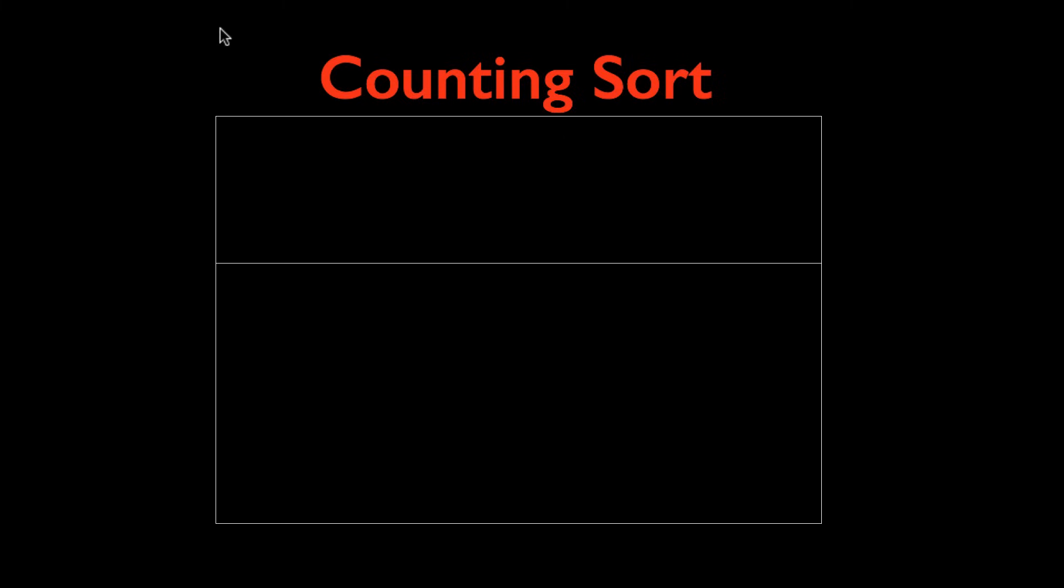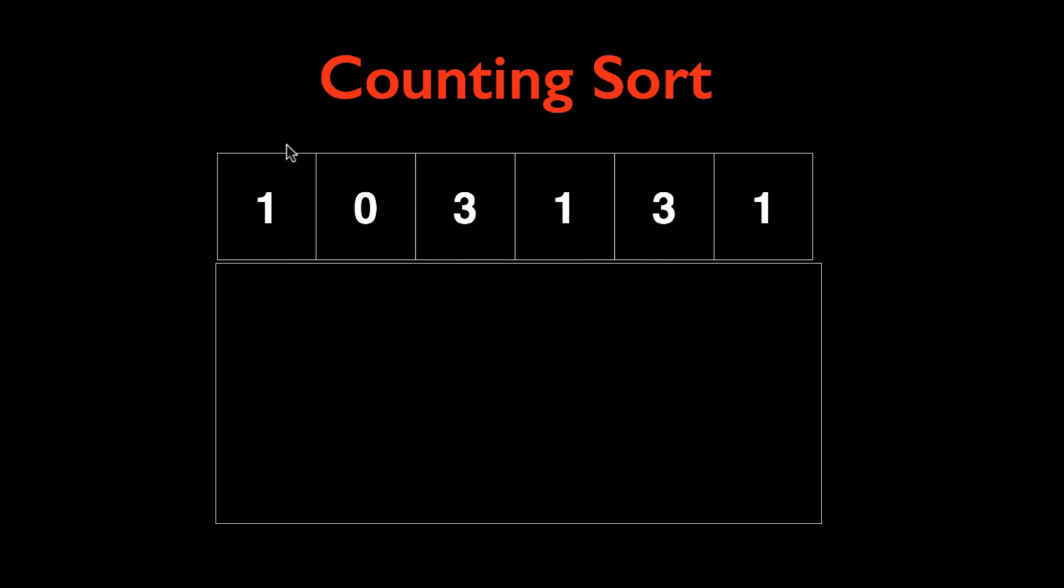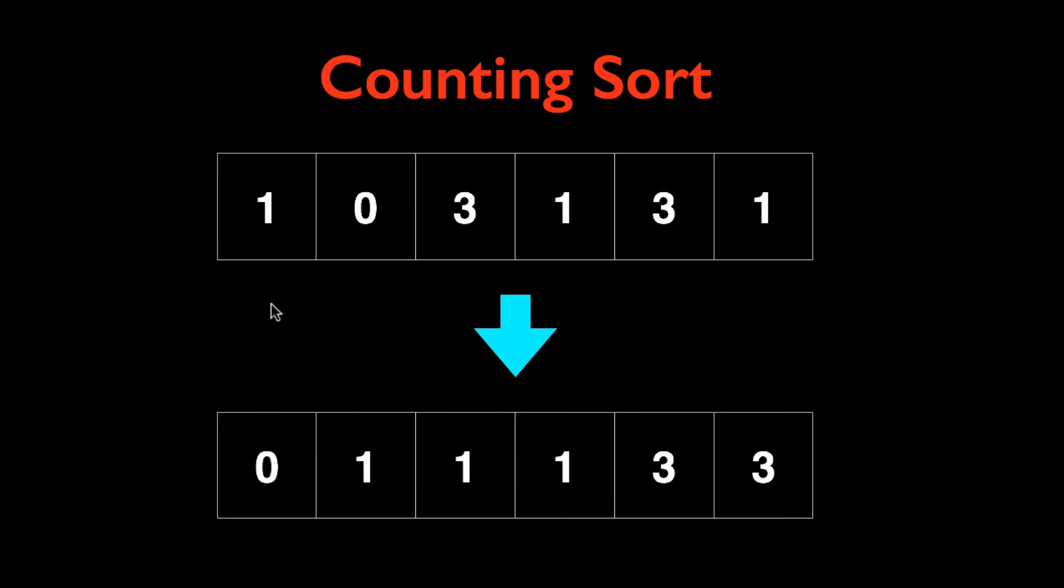Here's a quick introduction to counting sort. Let's just say as an example we are trying to sort this array into ascending order. Counting sort works the best when the range of numbers each value could have is very small in the array.